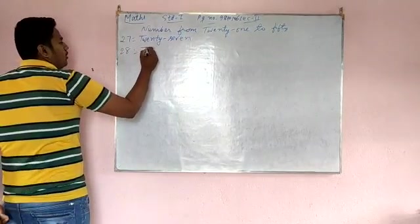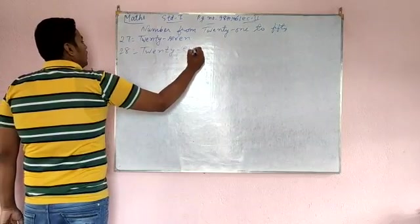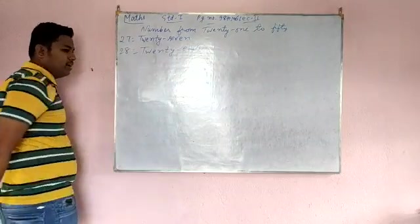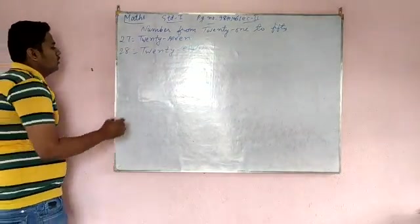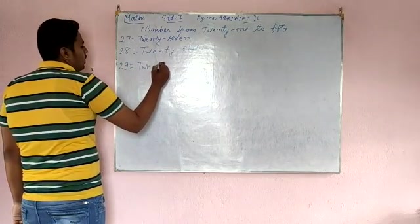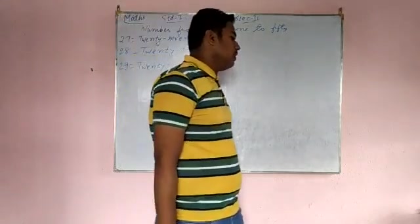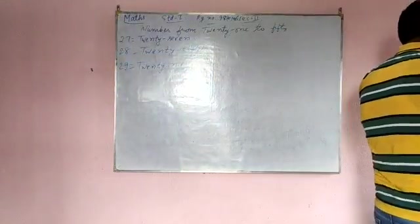Come to 28. T-W-E-N-T-Y, E-I-G-H-T, 28. 29, T-W-E-N-T-Y, N-I-N-E, 29. Now let's write down with me in your copy.